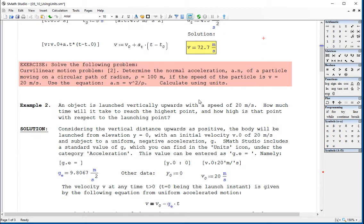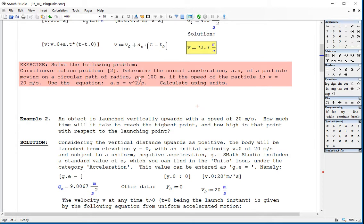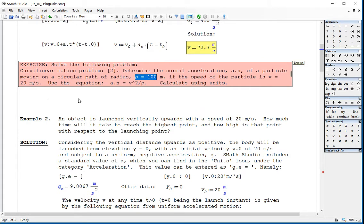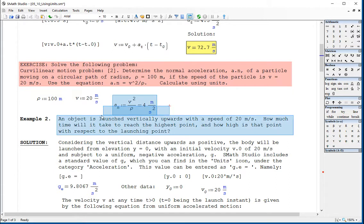As an exercise, I'm giving you this problem of curvilinear motion where you have the radius of a path. Remember, rho is R, control G. In this case, it will be 100 meters. The speed of the particle is 20 meters per second. Remember to put quote before the M and the S, not a single quote. Then you have your a_n equals v squared divided by rho. Try that on your own.